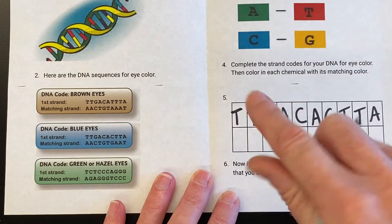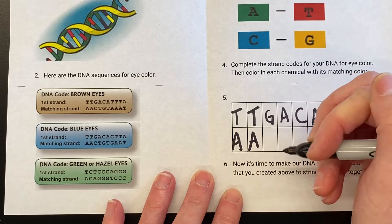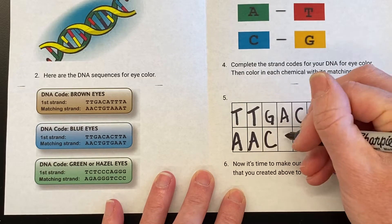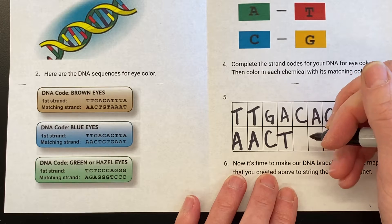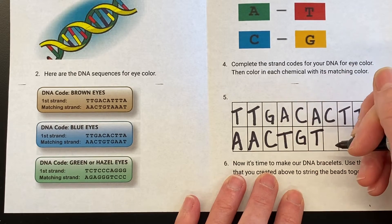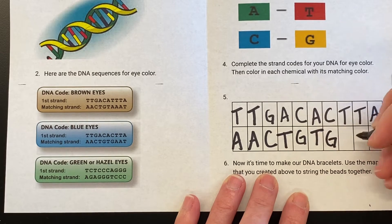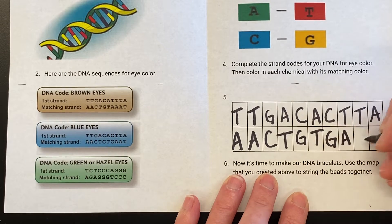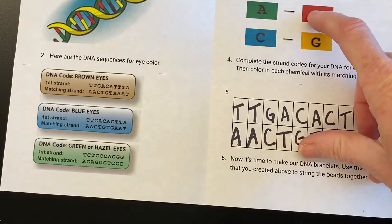For the bottom adjoining strand, we know that T pairs with A, so I've got: A, A, C, T, G, T, G, A, A, T.